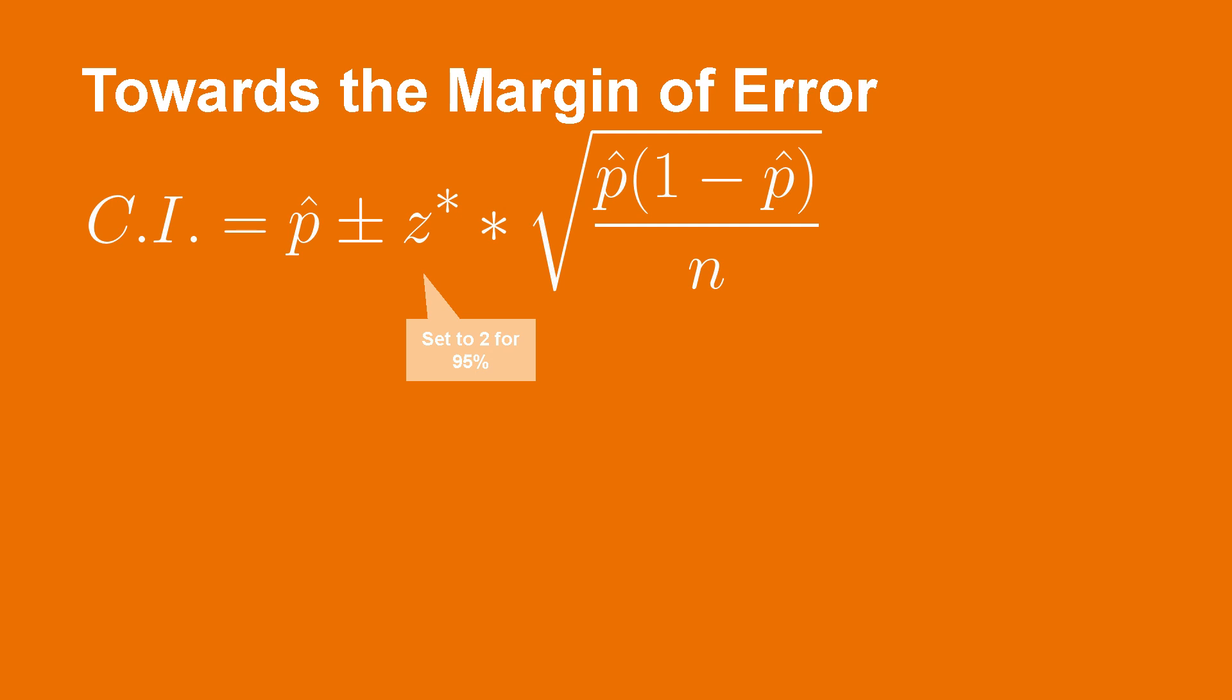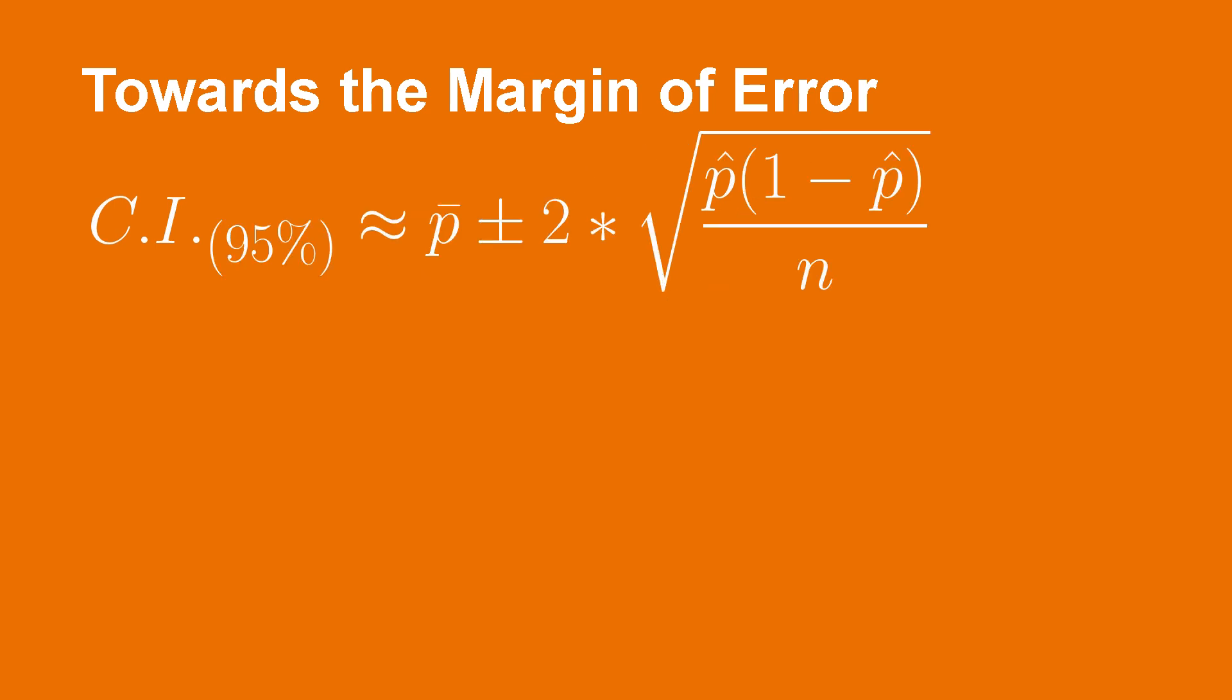Once we do this, we can take our original confidence interval and just set our z multiplier to 2. From here, if we remove the test statistic from the equation and just focus on the width of the confidence interval, we are left with the margin of error. This brings us to a formula for the margin of error, which is just plus or minus 2 times the standard error for a single population proportion.